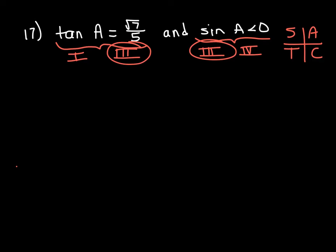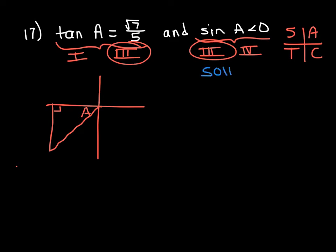Let's draw a triangle in our third quadrant. We go diagonally out into the quadrant and always connect to the x-axis. Angle A is always the angle between the x-axis and the hypotenuse — where your reference angle would be. Since tan equals opposite over adjacent, radical 7 is our opposite and 5 is our adjacent. The side opposite angle A gets radical 7, and the adjacent side along the x-axis gets 5.